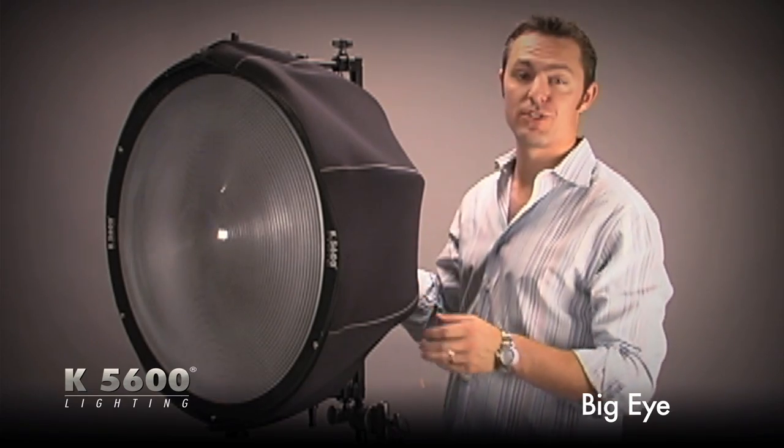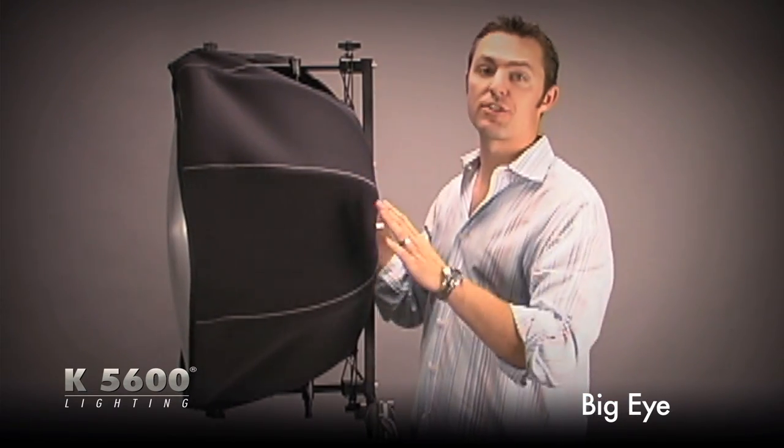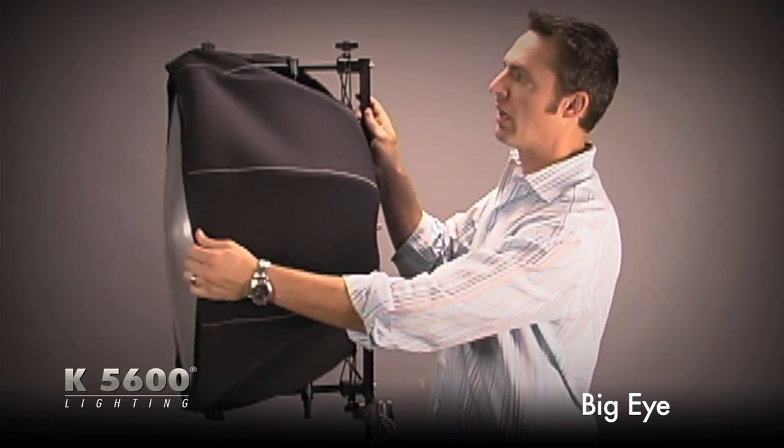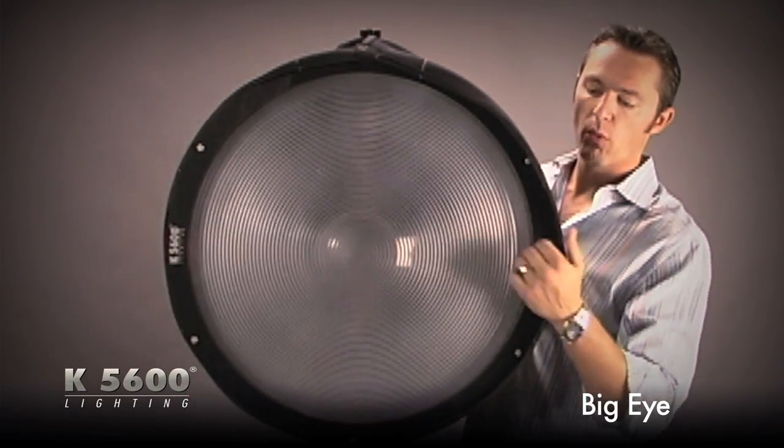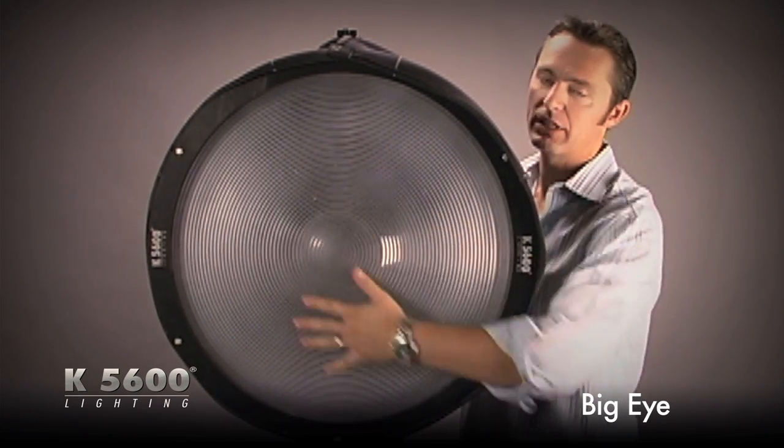One of the new accessories we have at K5600 is the Joker Bug Big Eye Fresnel. This is an accessory that can be used with your 200, 400, or 800 watt Joker Bug, and quite simply all we did was take an 18K standard HMI Fresnel lens and we molded it out of plastic.